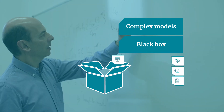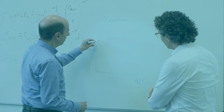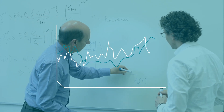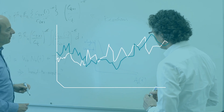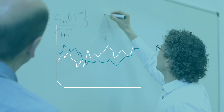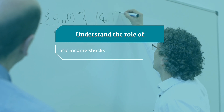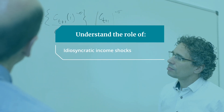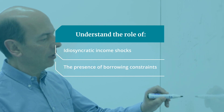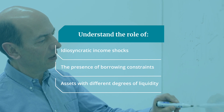In my research, mostly in collaboration with my colleague Davide de Bortoli, we are trying to explore whether simpler, analytically tractable models can be good approximations to these complex HANK models. In particular, we want to understand the role played by idiosyncratic income shocks, the role played by the presence of borrowing constraints, and the role played by different degrees of liquidity of different assets, which are often assumed and combined in these complex HANK models.